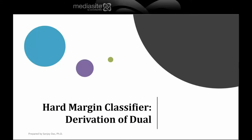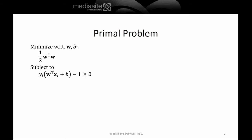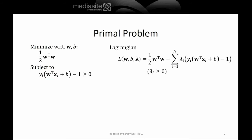Let's look at the derivation of the dual of the hard margin classifier. The primal problem is to minimize with respect to W and B: half W transpose W, subject to the constraint that Y_i times (W transpose X_i plus B) minus 1 is greater than or equal to 0. The Lagrangian is constructed directly from this, with a negative sign and Lagrange multiplier Lambda_i times these constraints, summed over all points i equals 1 through N. The Lagrange multipliers Lambda_i should be greater than or equal to 0.